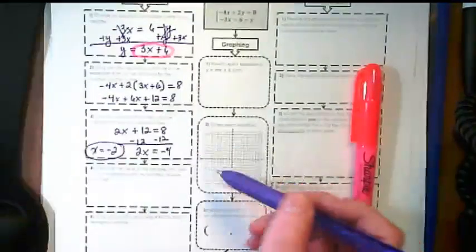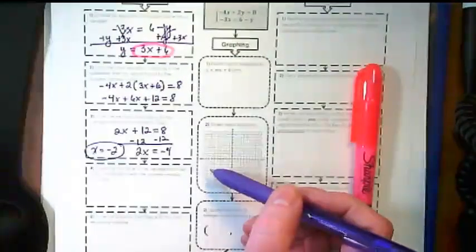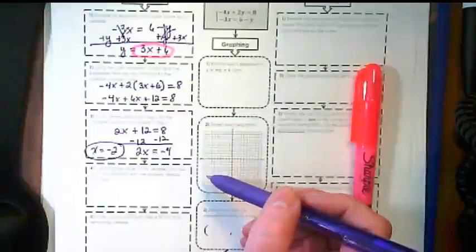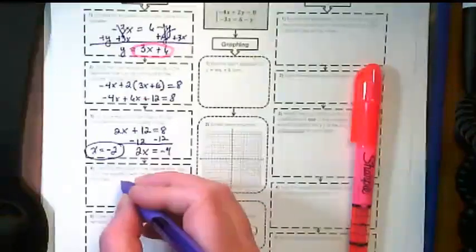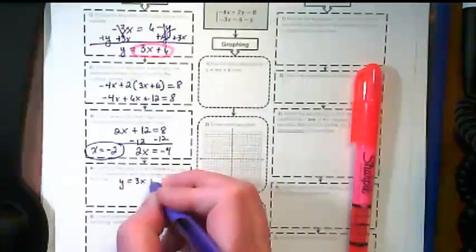We're going to substitute the variable from step 3 into the equation with the variable that we isolated in step 1. So we've got this y equals 3x plus 6. I'm going to put the negative 2 in for the x.